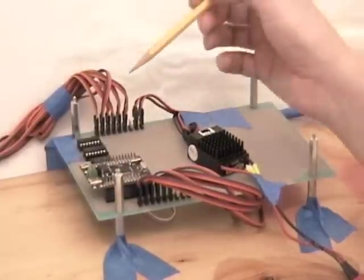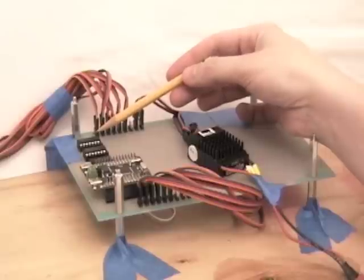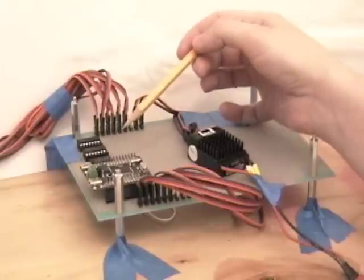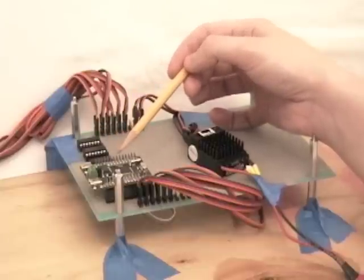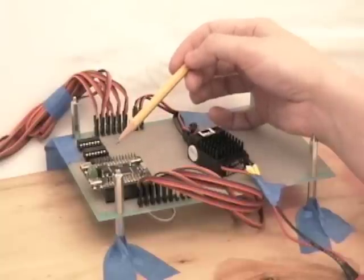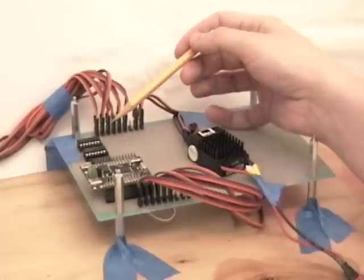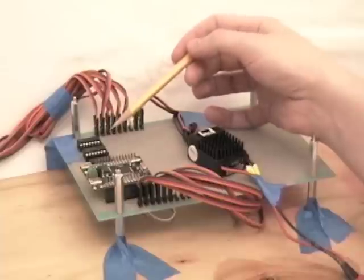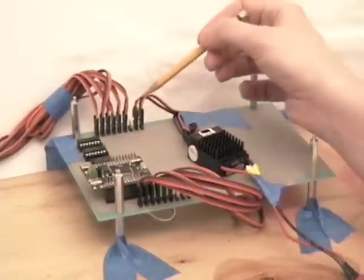There are three 7408 quad AND gates that are used to do the multiplexing. Each one of these is hooked up to one of the three pulse width modulators that I'm using. Then there are three separate group selection lines that go through and select which pulse in the pulse width modulation scheme to send out to each of the servos.